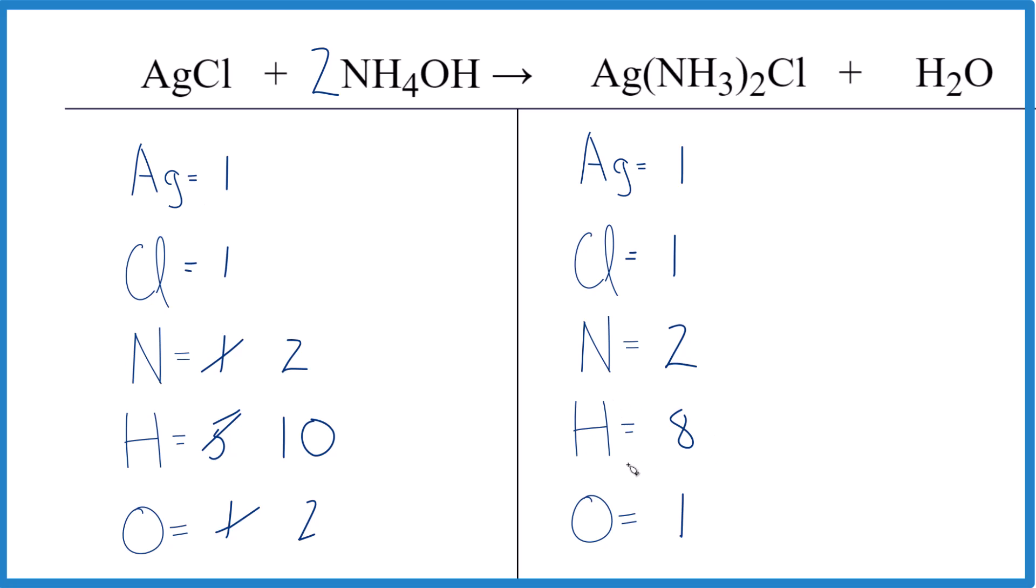So how do we get 10 of these hydrogens over here so the hydrogens are balanced? We have 2 times 3 is 6. So 6 plus 4, that would equal 10.